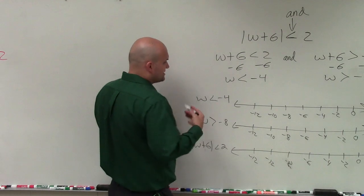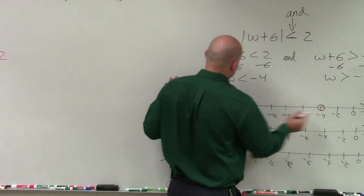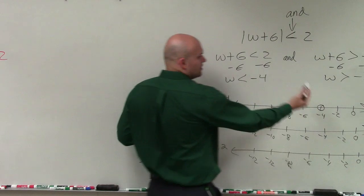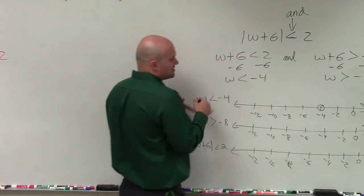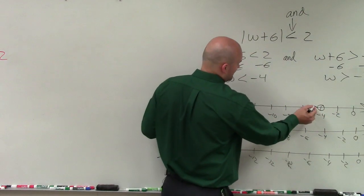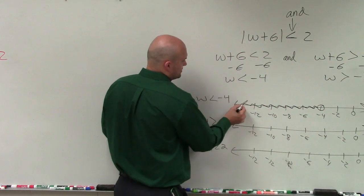So this states w is less than negative 4. So I go to negative 4, put in a dot. Since it's less than, not less than or equal to, my point is going to be open. Then it says all the values that are less than. Well, all values that are less than negative 4 are going to be to the left.